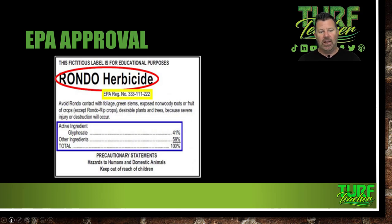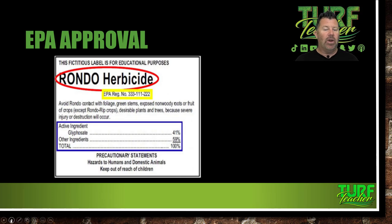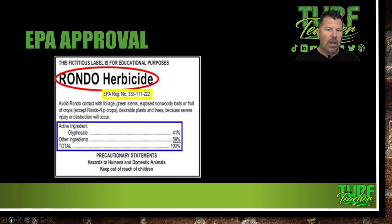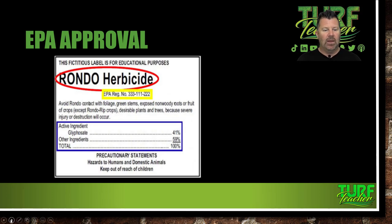So let's look at this fictitious label — Rondo herbicide. I wonder where it's coming from — it's kind of similar to Roundup, is it not? This is a fictitious label for educational purposes only. Avoid Rondo contact with foliage, green stems, exposed non-woody roots, or fruit of crops except Rondo rip crops. Desirable plants and trees because severe injury or destruction will occur. This is glyphosate, so it is 41% active ingredient. The other inert ingredients are 59%, which gives us 100%. This is a fictitious glyphosate label that we're just going to study in this lecture.